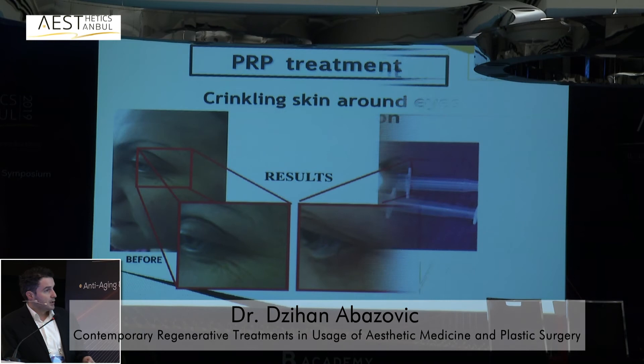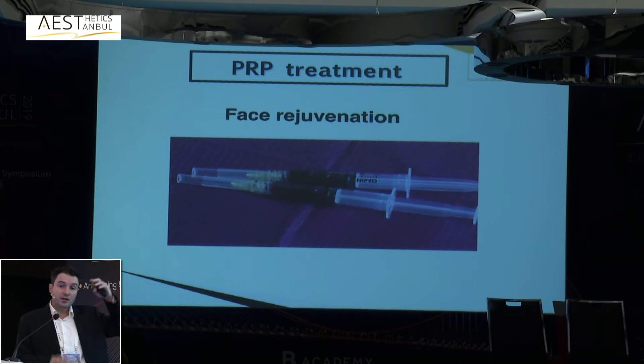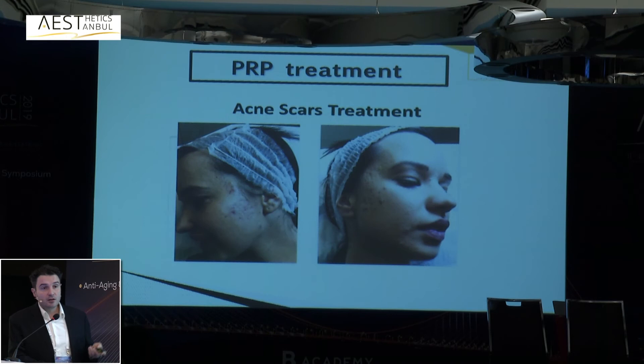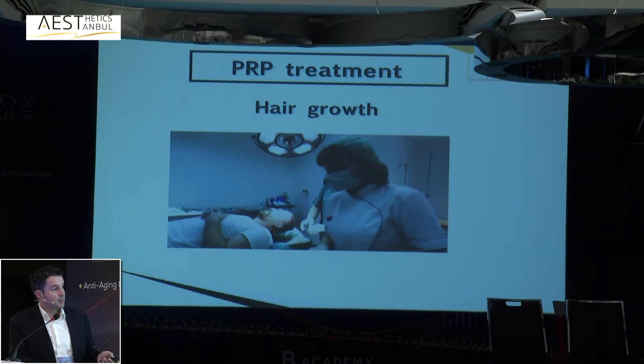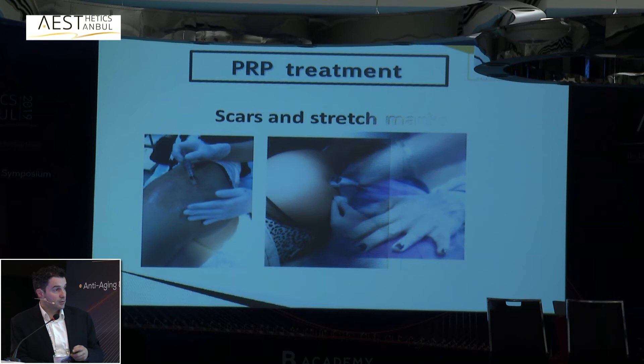We use PRP for face rejuvenation — here is a before-and-after photo at six months. Our PRP appears slightly reddish because we have shown that younger platelets contain more growth factors and are larger, so they are heavier and sit closer to red blood cells during centrifugation. We sacrifice some red blood cells to obtain a higher quality PRP. We also use it for acne scars, buttock region, cellulite, hand rejuvenation, and hair growth.